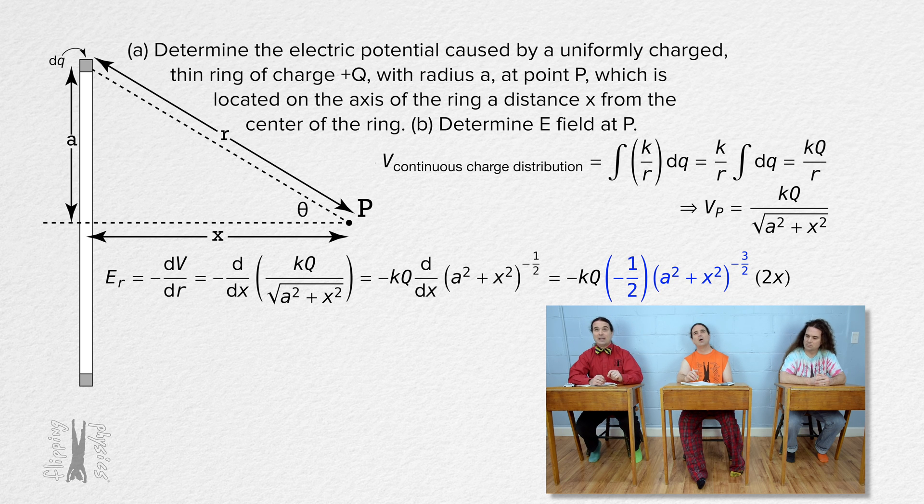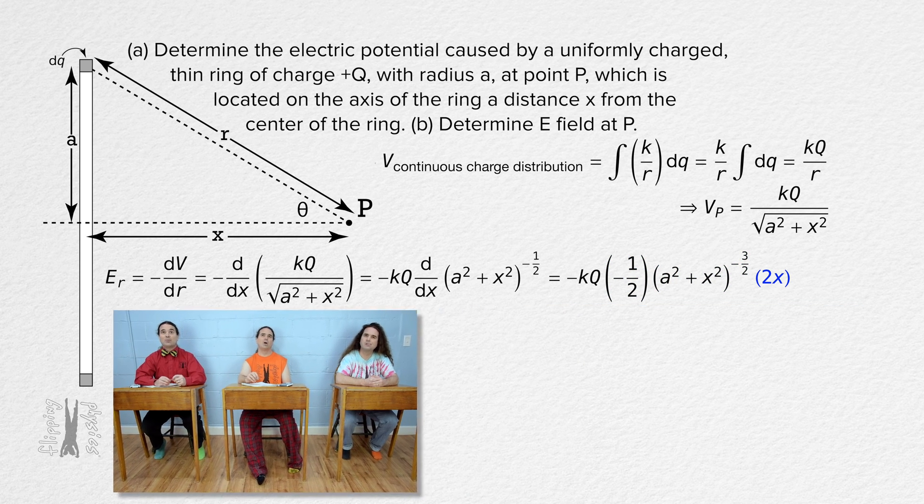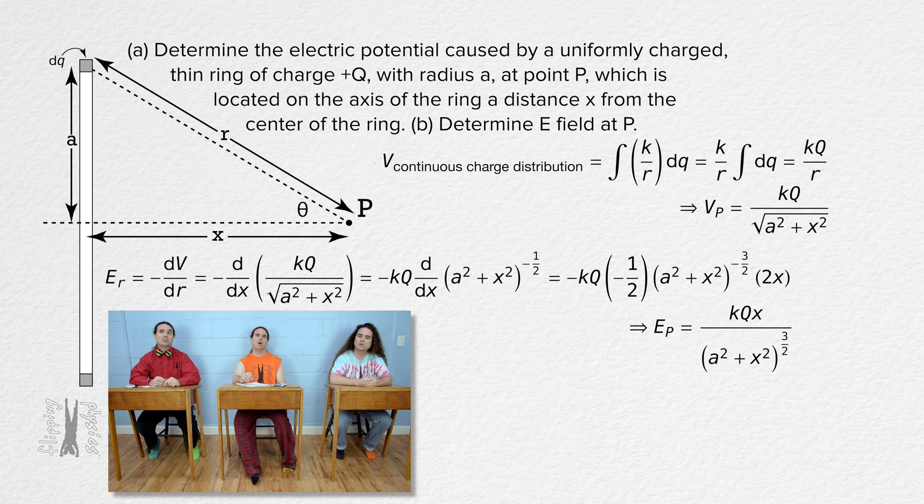And the derivative of the quantity a squared plus x squared with respect to x equals 2x. So the electric field at point p equals the quantity Coulomb constant times charge of the thin ring times the variable distance x all divided by the quantity a squared plus x squared to the 3 halves power.